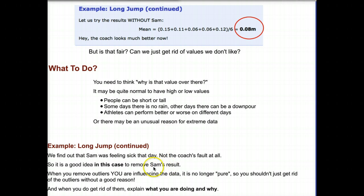So let's look back at Sam. We find out that Sam was indeed feeling sick that day. Not the coach's fault at all. So perhaps in that case, it would be a good idea to remove Sam because that's abnormal. He's not normally sick. So when you get rid of the outlier, then you can truly see what the data is doing.